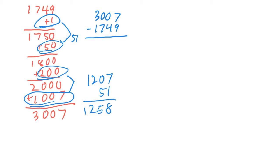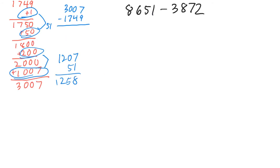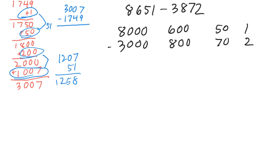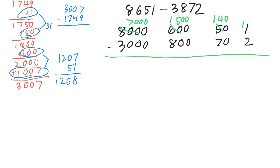For expanded column subtraction, write out your columns. We have 8,650 and 1, and the other number breaks down just like that. For 1 minus 2, make that 40 and this becomes 11. For 40 minus 70, make this 500 and this becomes 140. For 500 minus 800, we make that 7,000 and that 1,000 goes there. That gives us 9 in that place, and then the rest of the subtraction you can do on your own. That is your expanded column subtraction review.